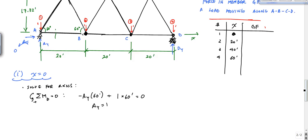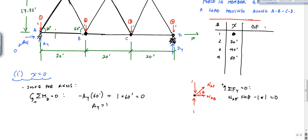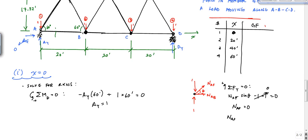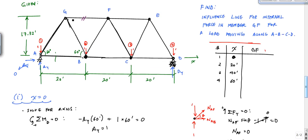To isolate joint A, I have a loading of one at the joint, a reaction of one, and internal forces NAF and NAB. Taking the sum of forces in the vertical direction: NAF·sin(θ) minus one plus one equals zero, which gives NAF = 0. With NAF = 0, taking sum of forces in the horizontal gives NAB = 0 as well. Going to joint G, member GF also ends up with a force of zero.